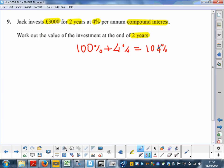Now, this as a decimal is 1.04. So all I have to do is put 3,000 times 1.04 squared for 2 years. If it was 3 years, it would be to the third power, and so forth.